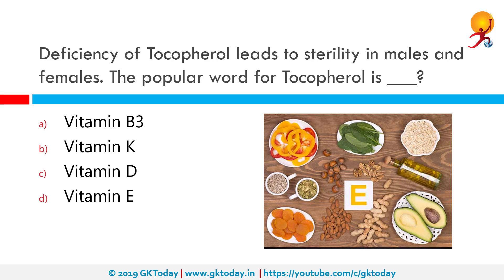Deficiency of tocopherol leads to sterility in males and females. The popular word for tocopherol is vitamin E. Originally called the anti-sterility factor or anti-sterility vitamin, tocopherol comes from the Greek word tokos meaning offspring. Vitamin E is essential for normal reproduction, muscle development, formation of red blood cells, and helping your body use vitamin K.